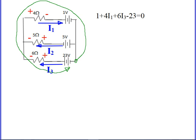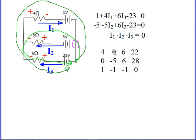And so the first thing I do is I gain 1. And I gain 4 I1. And then I gain 6 I3. And then I lose 23. And then I'm back where I started, so that's all equal to 0. Now I'm going to choose to do the bottom loop. I'm going to start at the same place, go around it the same counterclockwise direction. First thing I'm going to do is to lose 5, lose 5 I2, gain 6 I3, lose 23. And all those gains and losses must add up to 0. And then I choose a junction. I'm going to choose this junction here. Just for variety, it has I1 going in and I2 and I3 coming out. Must be as much current in as out of a junction.